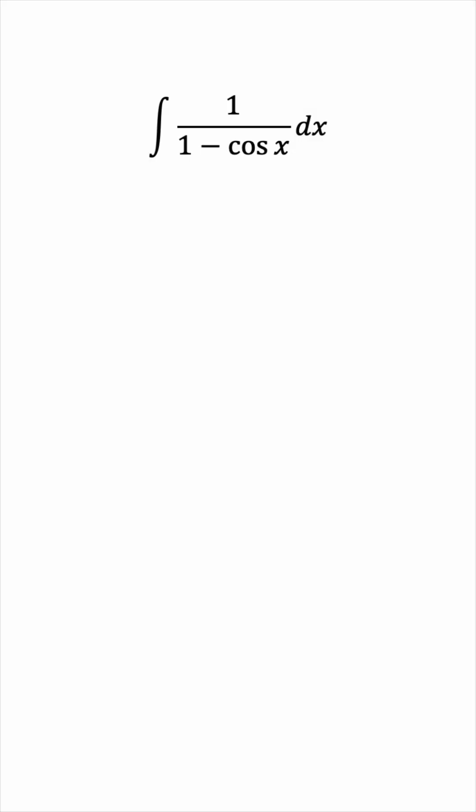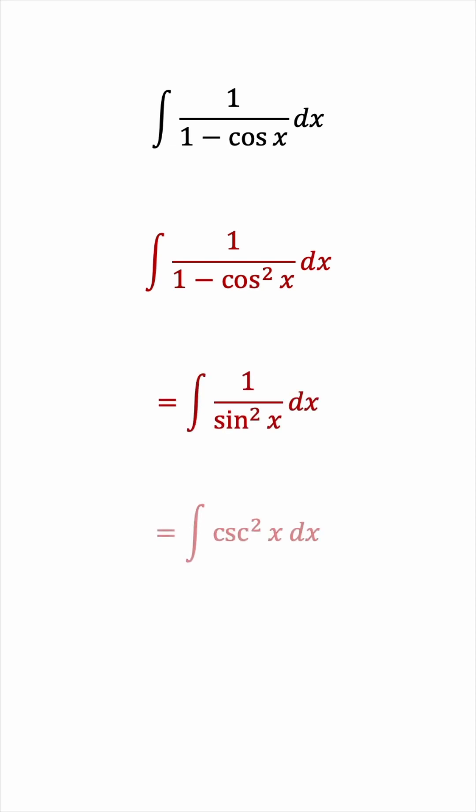First of all, wouldn't it be nice if this were a cosine squared instead? In that case, we would have used the Pythagorean identity to rewrite this as sine squared in the denominator. This would have been cosecant squared, which has a known antiderivative. Unfortunately, though, that's not the case.